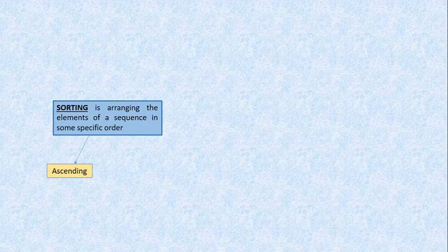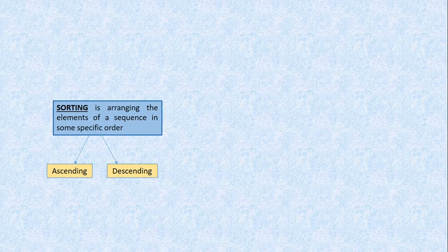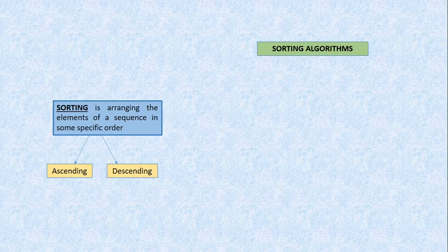Sorting is arranging the elements of a sequence in some specific order. If I have a number of numeric values or any sequence, I have to arrange the elements in some specific order — that could be ascending order or descending order. When I arrange a sequence of elements in any order, that process is known as sorting. The three types we are going to study are Bubble Sort, Selection Sort, and Insertion Sort.